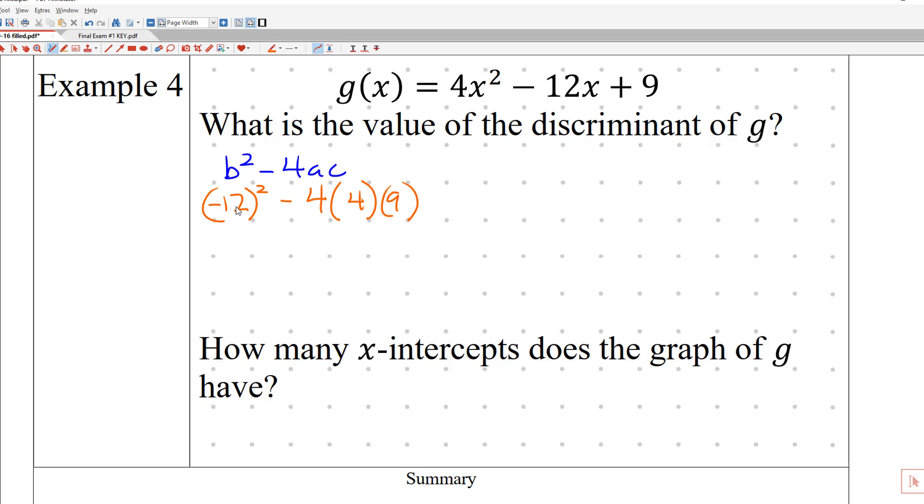Well, negative times negative is positive. So 12² is just 144. So positive 144 minus. Okay, it is going to be minus because they're all positive over here. What's the easiest way to do this one? I'm going to probably do 4 times 9.